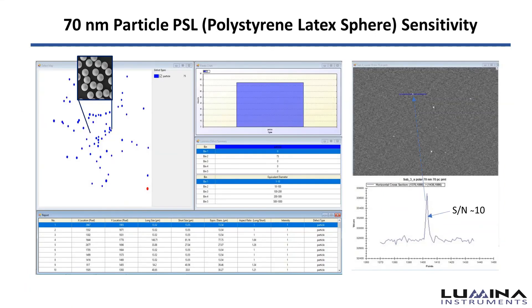The AT1 system is phenomenal at detecting particles due to its 70 nanometer particle PSL sensitivity. A cross-section through a particle indicates a strong signal-to-noise ratio of 10.